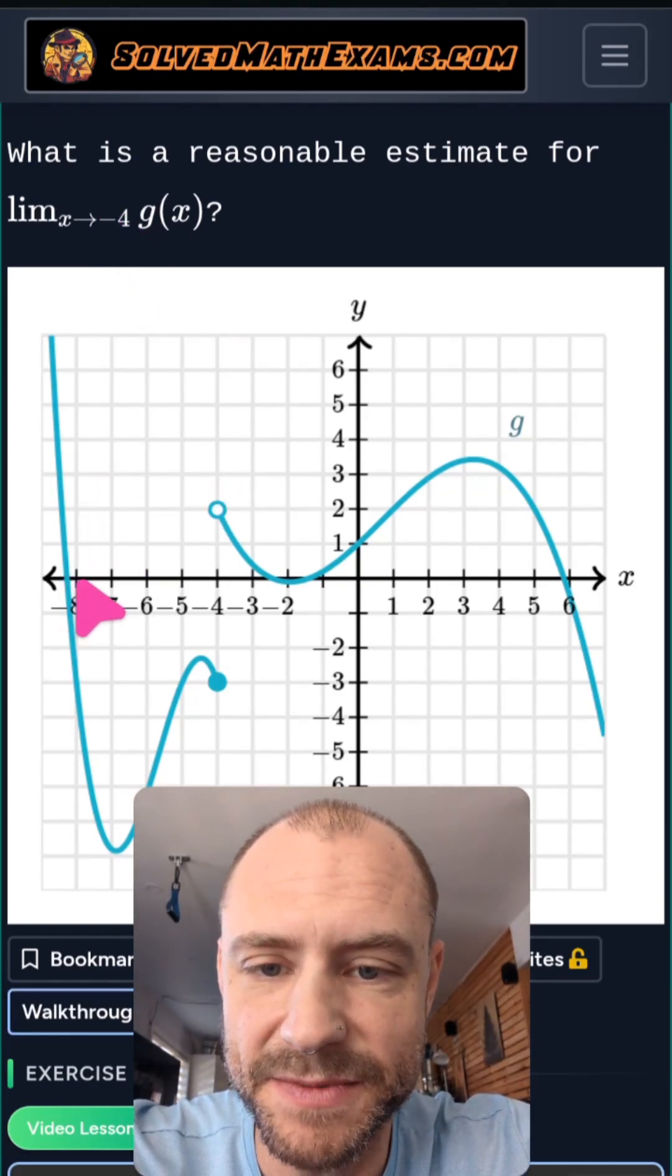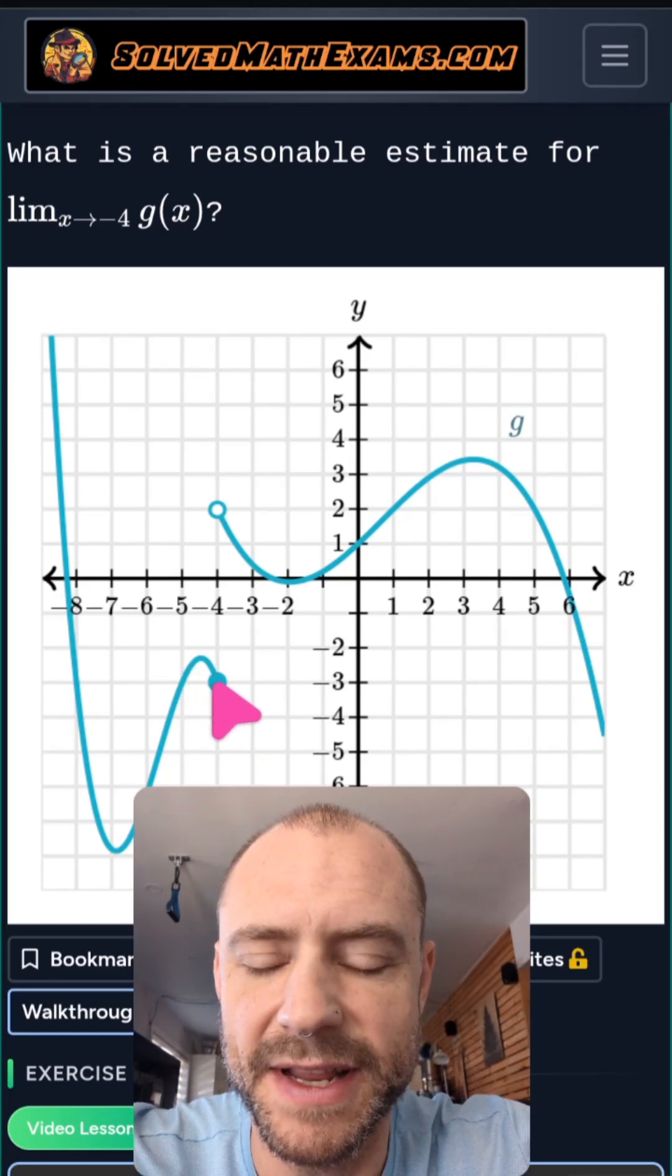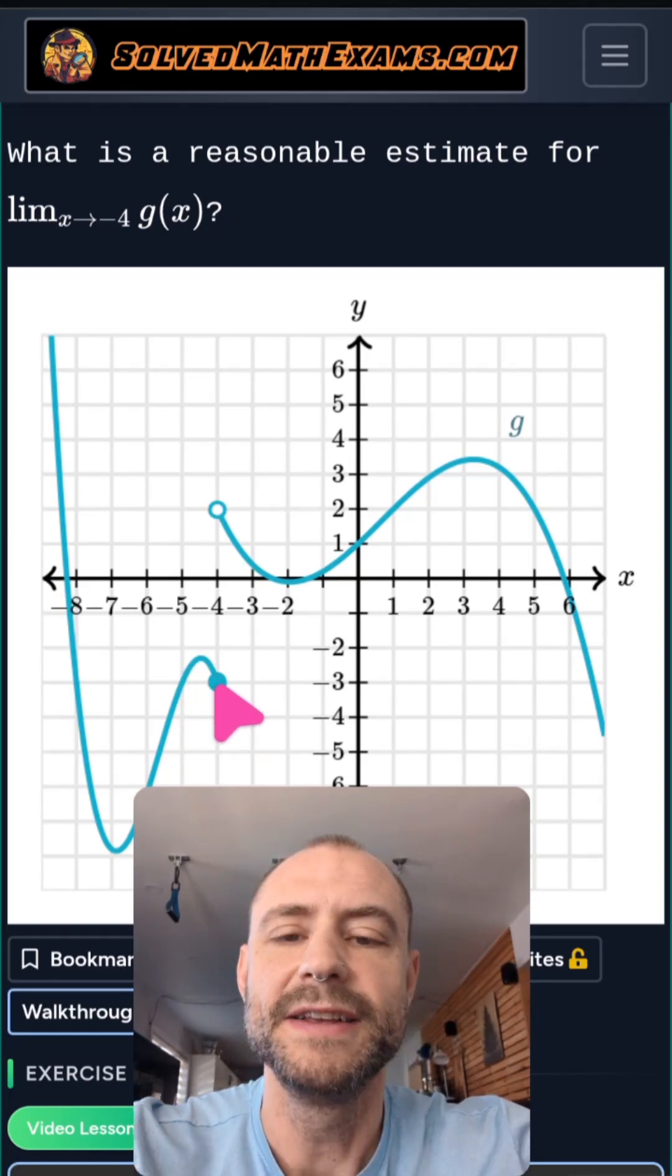Now we look at the left hand limit. But as we come to negative 4 from the left, we have to follow this portion of the g function. So that brings us down here to negative 3.